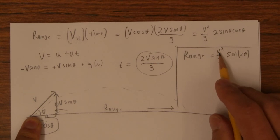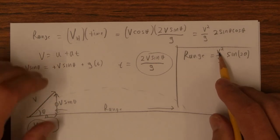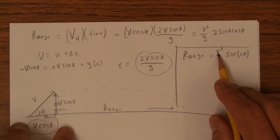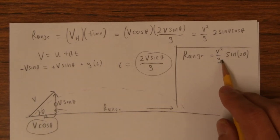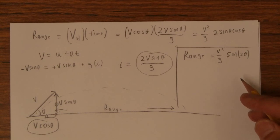It's V squared because if you double V, you double the time it's in the air, you also double your horizontal velocity. So that's why it's V squared, and then stronger gravity, the less far it goes. So that's the range equation.